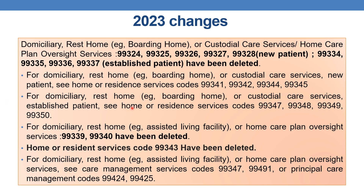And for domiciliary, restroom or custodial care services — established patients — refer to the revised home or resident services established patient codes: 99347, 99348, 99349, and 99350. Another set of deleted codes are for domiciliary or restroom assisted living or home care plan oversight services: 99339 and 99340. They have been deleted.